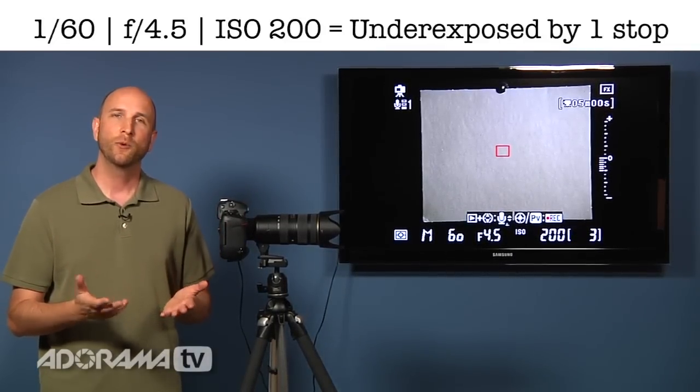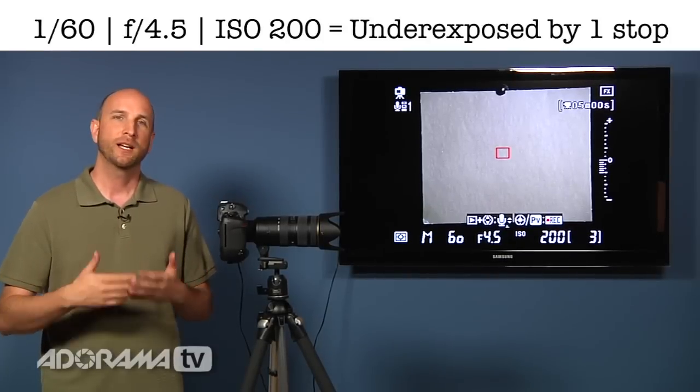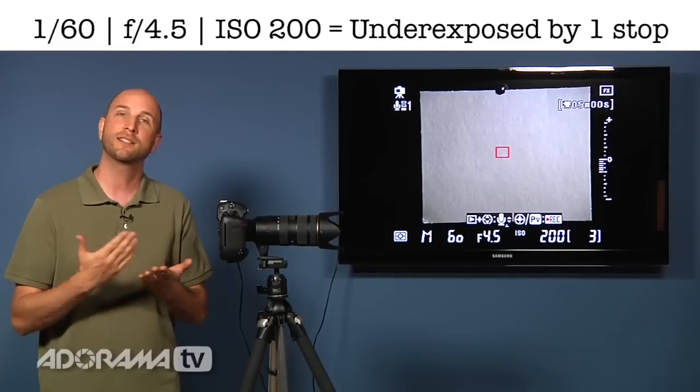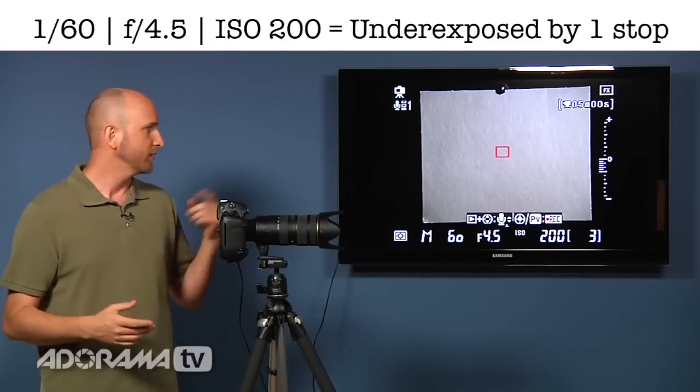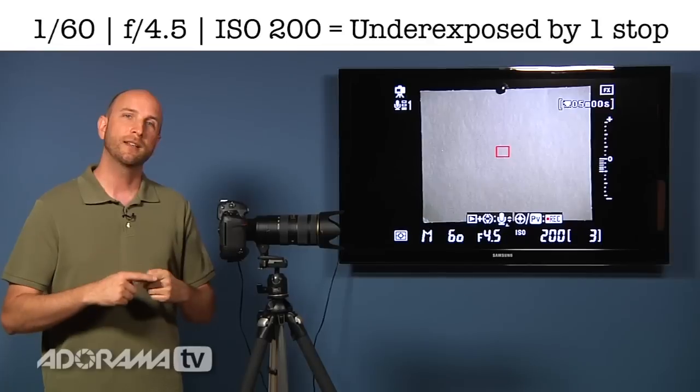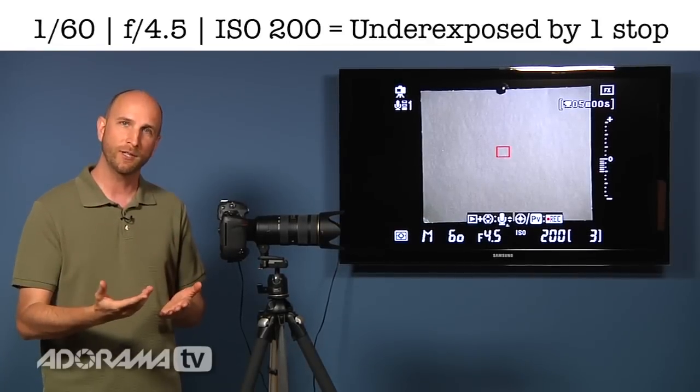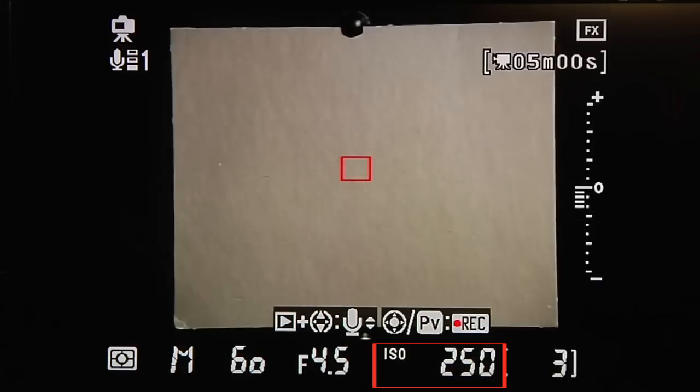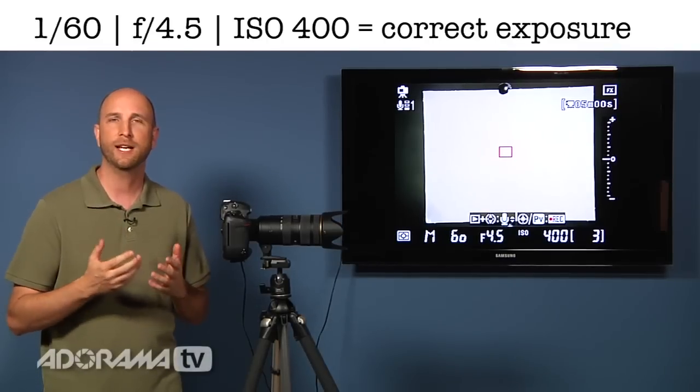Well, what does it need to go to? Again, I know that I'm a full stop underexposed, so I can change the ISO value by a stop. It's at ISO 200. The next stop is 400. That's the next full stop. So, let me do that. I'll change the ISO. So, there's three clicks. It goes to 400. Look at that. Perfectly exposed.